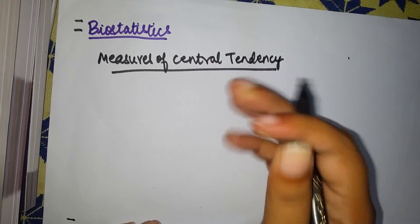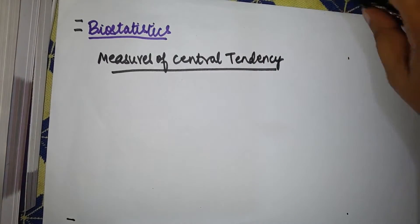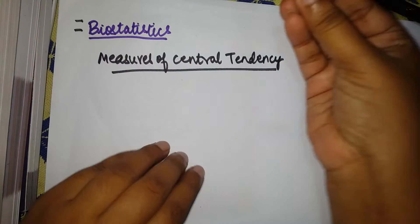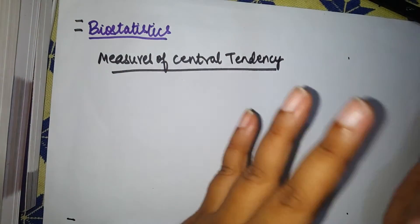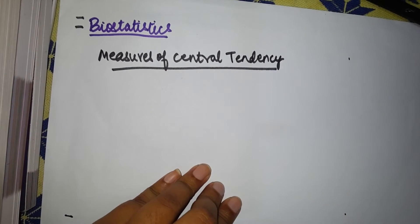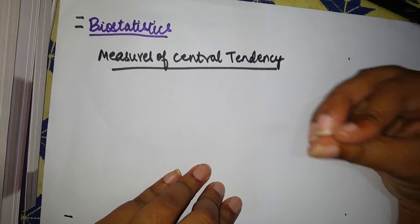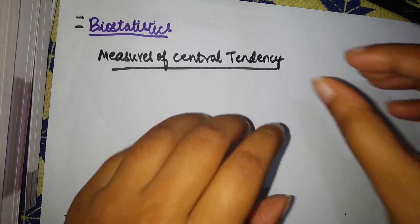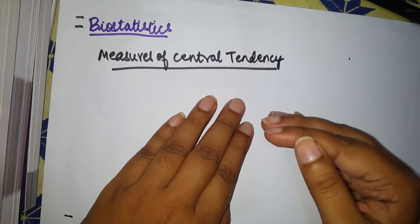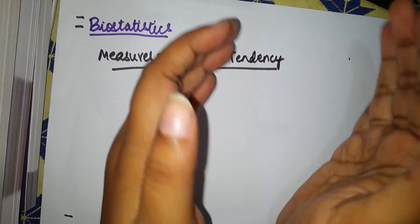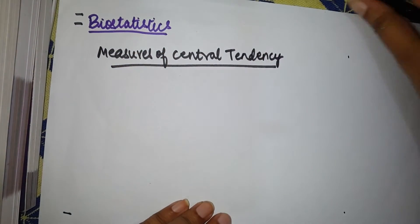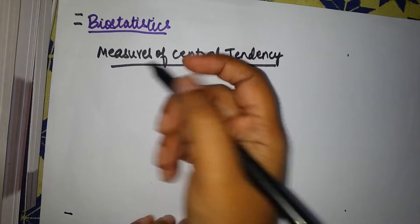What is the meaning of measures of central tendency? In biostatistics, we take a large population, arrange them in either ascending or descending order, and study their characteristics. Measures of central tendency is any calculation you do to get to know the center part of this arrangement. You have three values for that.